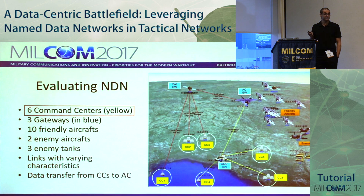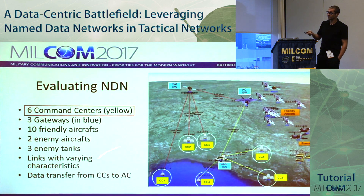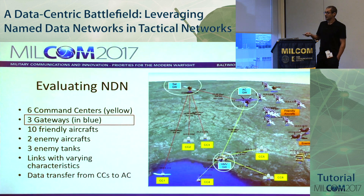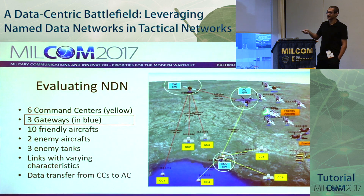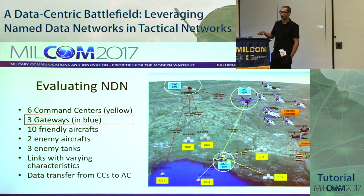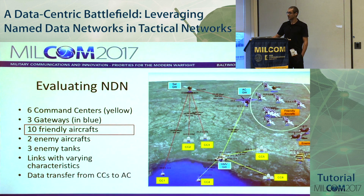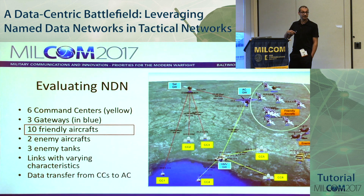The environment has a bunch of aircraft and six command centers (shown in yellow). The objective is to transfer information between command centers and aircraft. To connect them, there are gateways: a satellite node, an aircraft serving as gateway, and a Humvee serving as a gateway. To pull information from any aircraft, you have to traverse at least a couple of these. The friendly aircraft are the ones that send or receive data from the command centers.